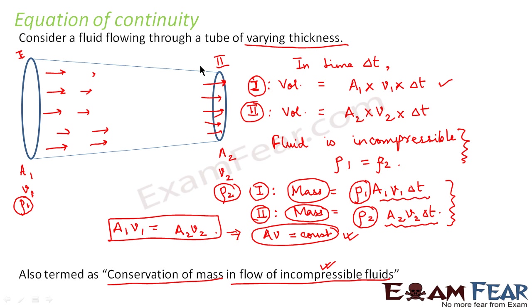We considered the two ends of the tube as 1 and 2. At end 1, the area is A1, velocity is V1, and density is rho1. At end 2, the cross-sectional area is A2, velocity is V2, and density is rho2. In a small time interval delta T, the volume covered at end 1 is A1 times V1 times delta T.